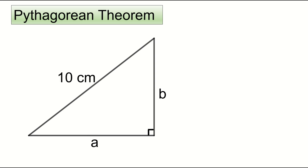Applying the Pythagorean theorem to our triangle: A squared plus B squared equals 10 squared, equals 100.